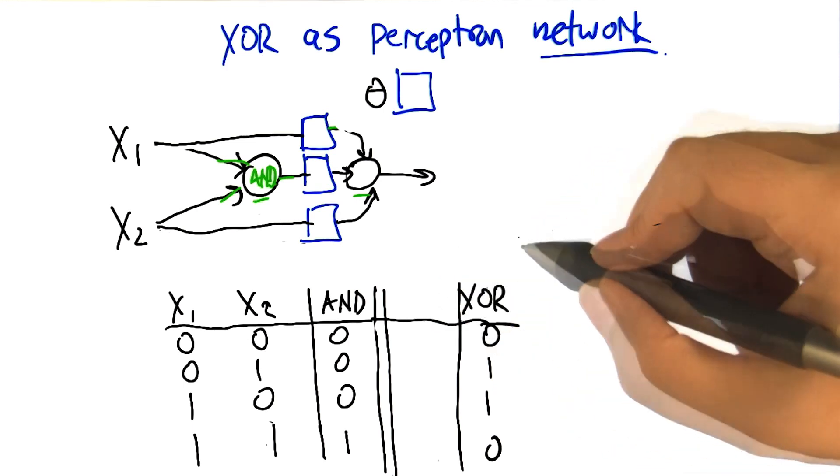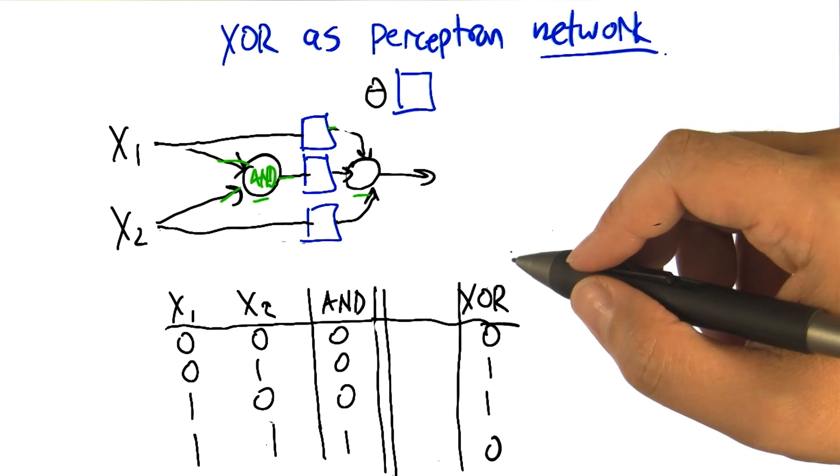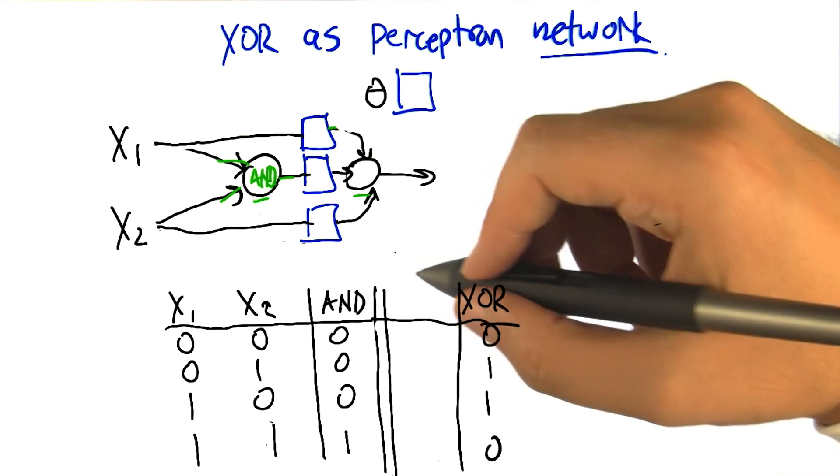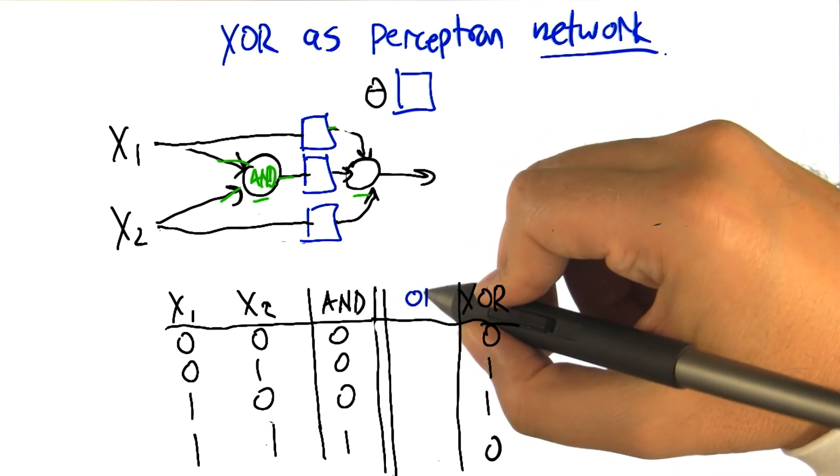We know that Boolean functions can all be represented as combinations of AND, OR, and NOT. So I'm going to recommend that you fill out that empty column you have with OR.